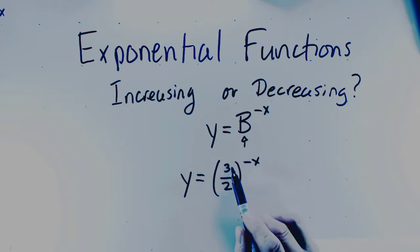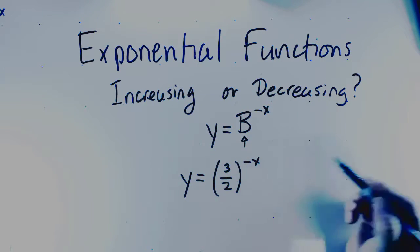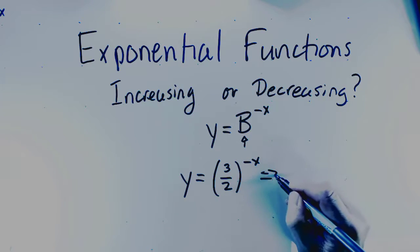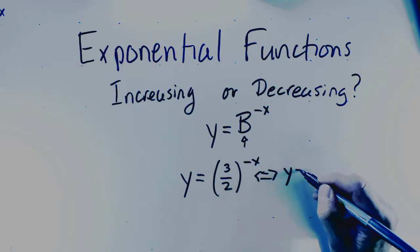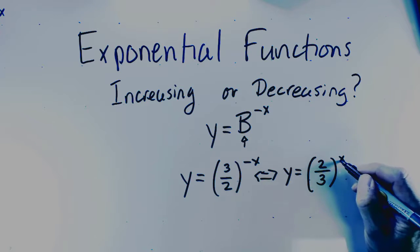In this case you will notice that the base is greater than one, and this is a negative x, and so that means take the reciprocal, so this is essentially equivalent to y equals two-thirds to the exponent x.